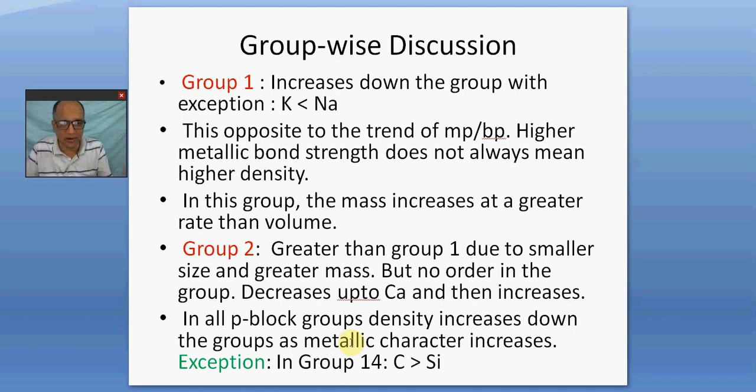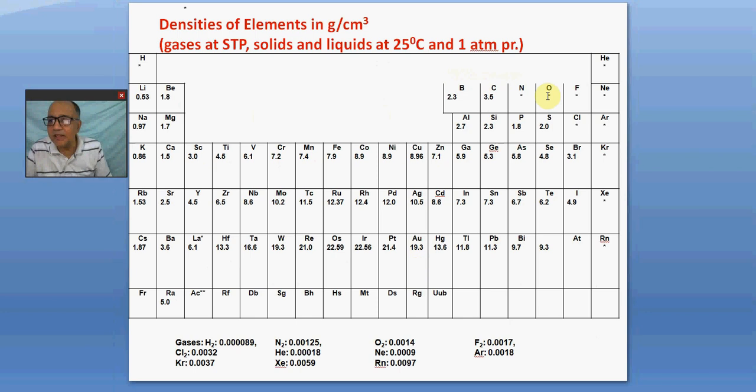But in all the groups in the p-block, they are very disciplined. The density goes on increasing down the group as the metallic character increases. The only exception is in group 14, carbon, taking the diamond allotrope into consideration, has the highest density, 3.51. Compared to that, silicon has a lower density. Otherwise you see in all the p-block groups it goes on increasing. Boron 2.3, aluminum 2.7, gallium 5.9, indium 7.3, thallium 11.8. And similarly carbon, this is the only exception here, 3.5. Carbon is greater, this is diamond, not the amorphous allotropes. Silicon is 2.3, germanium is 5.3, tin is 7.3, lead is 11.3. So also in group 15, group 16.